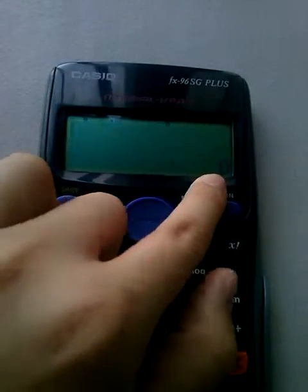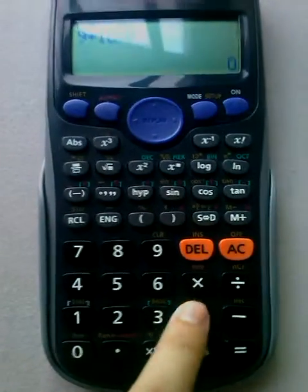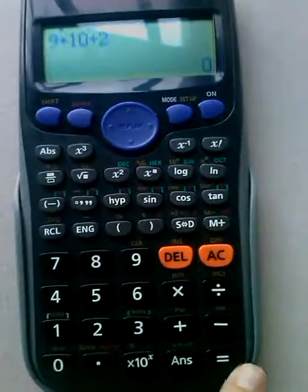At the side, right side. So now we're going to take nine plus ten plus two. As you can see, it's nine plus ten plus two, and press the equal sign.